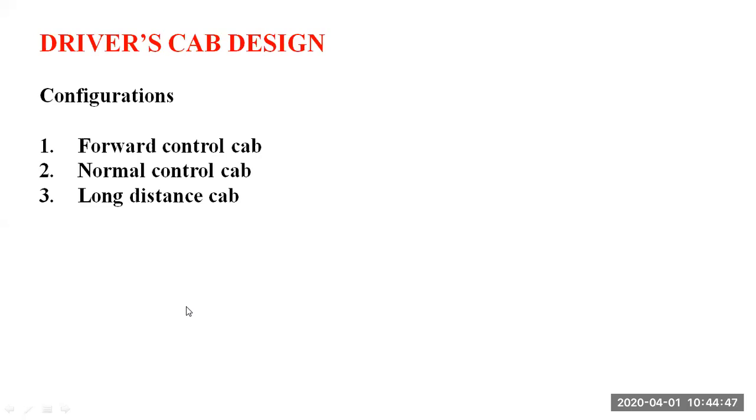We're going to cover forward control cab and normal control cab. As an assignment, you need to find out what a long distance cab is and come back for the next lecture to discuss it in detail. We have already seen a very long video on this long distance cab for a Volvo truck — that is a cab or cabin designed for long distance travel. We'll go ahead and first check what a forward control cab is.